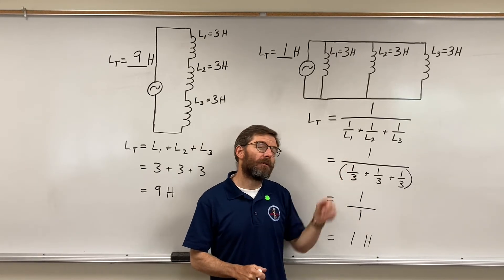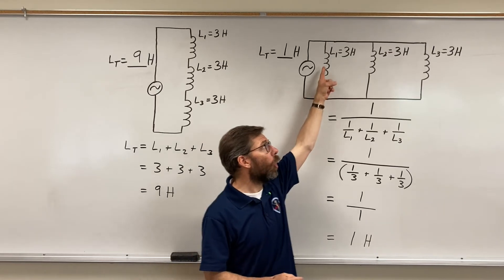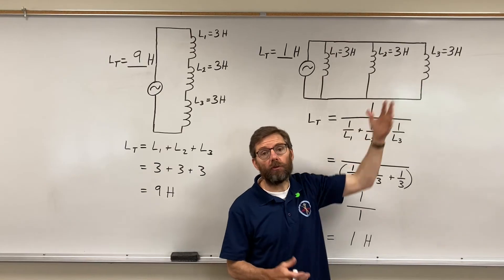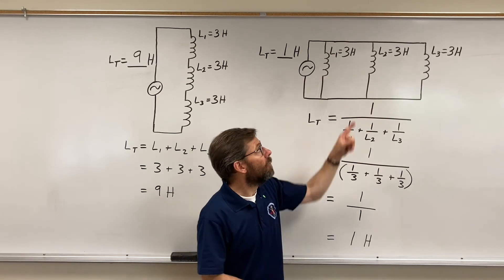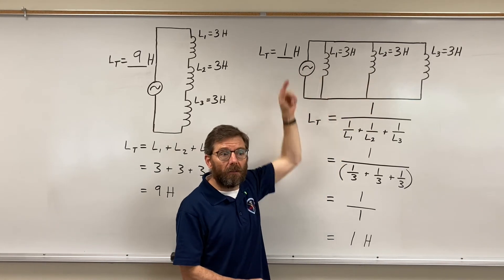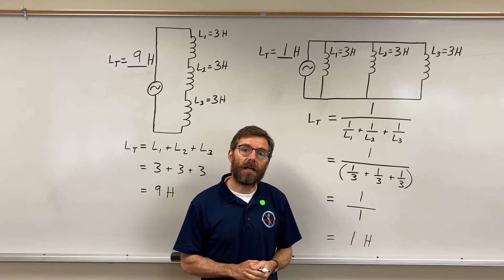That's how we add them, series and parallel. And some of you remember there was that third formula for adding parallel, where if they are all the same size, you simply take the value divided by how many there are. So they're all three Henry's divided by three equals one. That's the little trick, the shortcut, if they're all the same size.